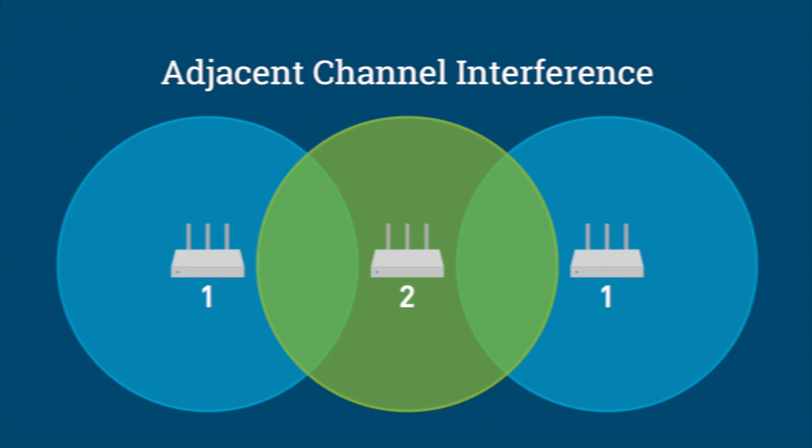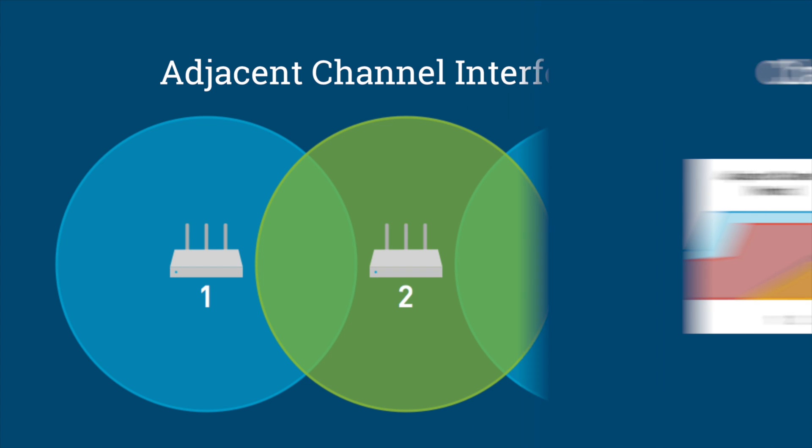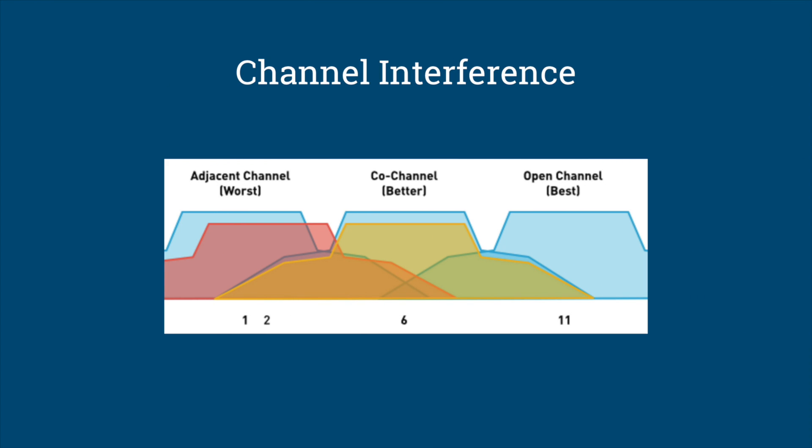The second type is adjacent channel interference, which occurs when access points in close proximity are operating on overlapping channels, like channels 2 and 3 in the 2.4 GHz spectrum. Adjacent interference is more damaging than co-channel interference and results in packet corruption and layer 2 retransmission.